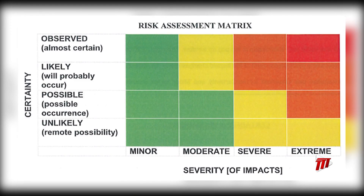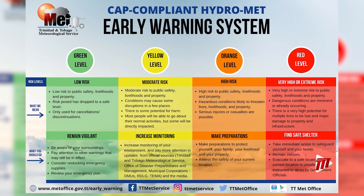The yellow level would indicate a border risk to public safety and livelihoods; property conditions may cause some disruptions in a few places. There is some potential for minor injuries, and most people would be able to go about their normal activities, but some would be directly impacted. You have to have a heightened, increased monitoring of your environment and stay tuned for all updates from the Met Service, the ODPM, or the regional corporations' disaster management units.